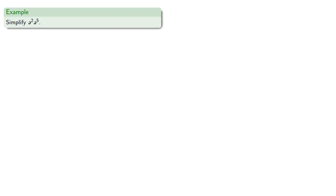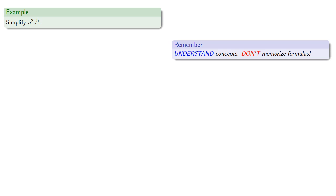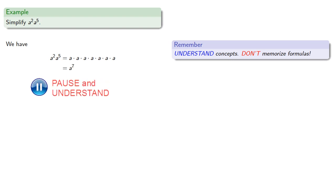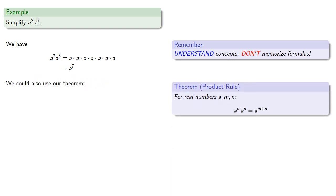So let's simplify a to the second times a to the fifth. Remember, understand concepts — don't memorize formulas. What we're doing is: a to the second times a to the fifth is two factors of a times five more factors of a, which is seven factors of a. But we could also use our theorem: a to the second times a to the fifth is a to the two plus five, which is a to the seventh.